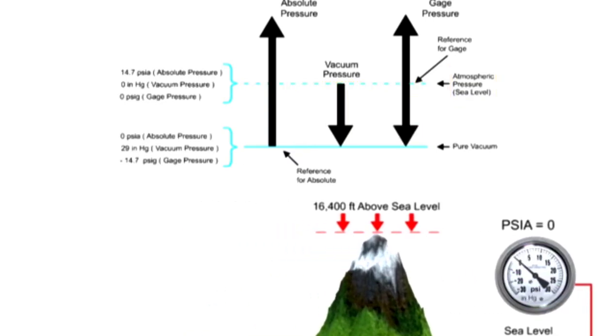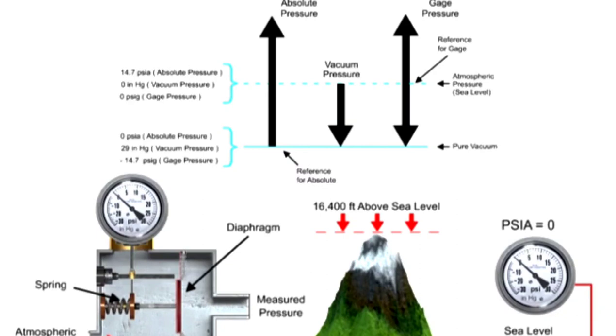Gauge pressure can also be measured with a mechanical diaphragm gauge. Using atmospheric pressure as the reference, the diaphragm bends towards the side with the lowest pressure that operates the spring that is mechanically linked to the gauge pointer.